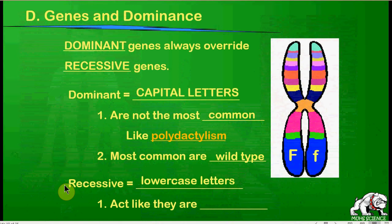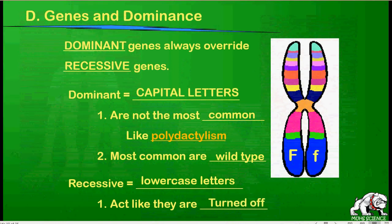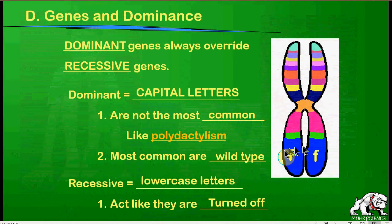Recessive traits are labeled with lowercase letters, and you have to study these things to know which one is dominant and which is recessive. In the presence of a dominant trait, the recessive trait acts like it is basically turned off — though that's not entirely the case. For simplicity purposes, it's like the recessive trait is turned off.